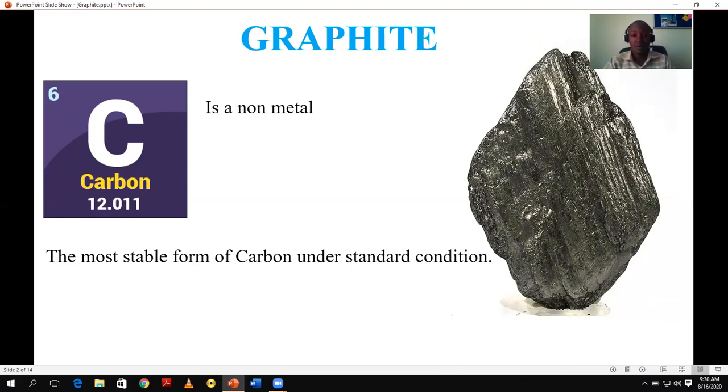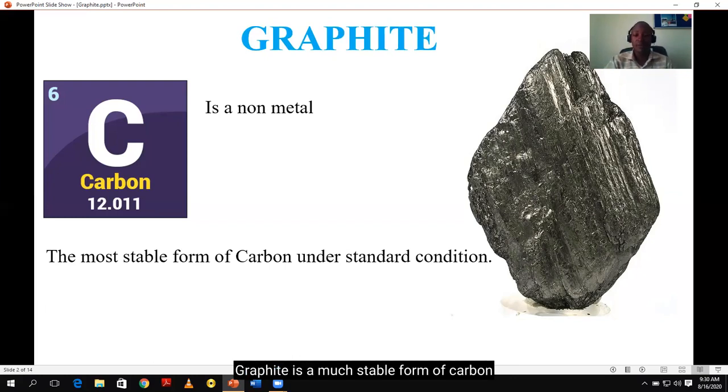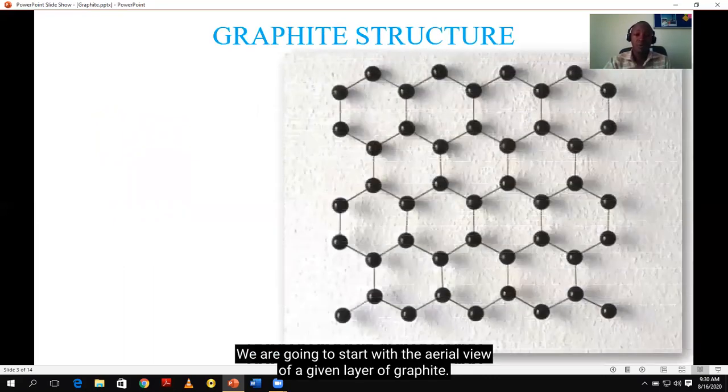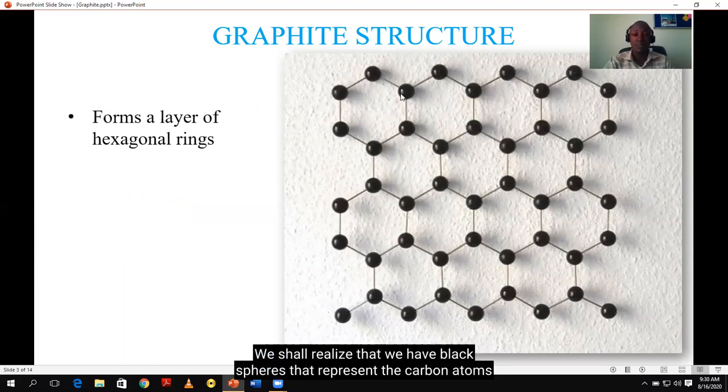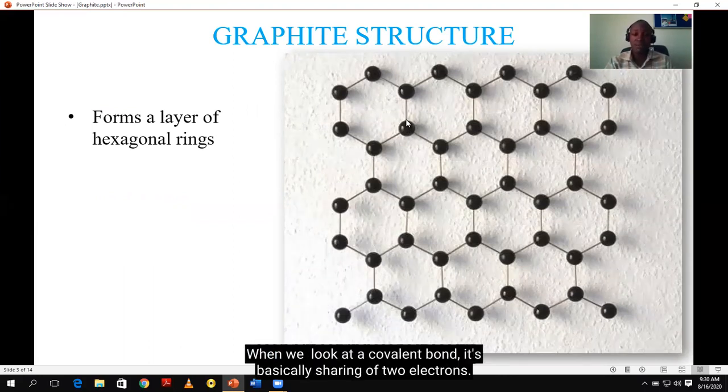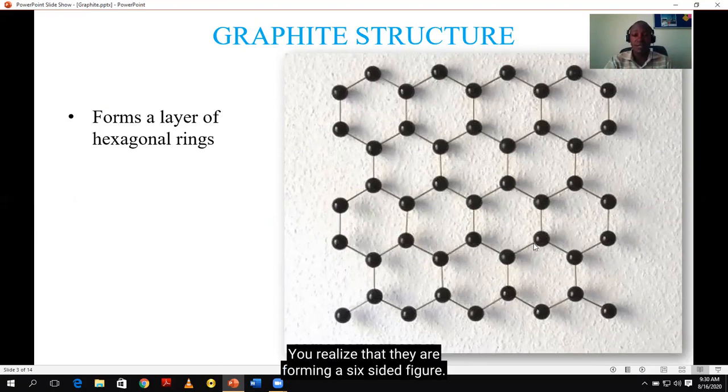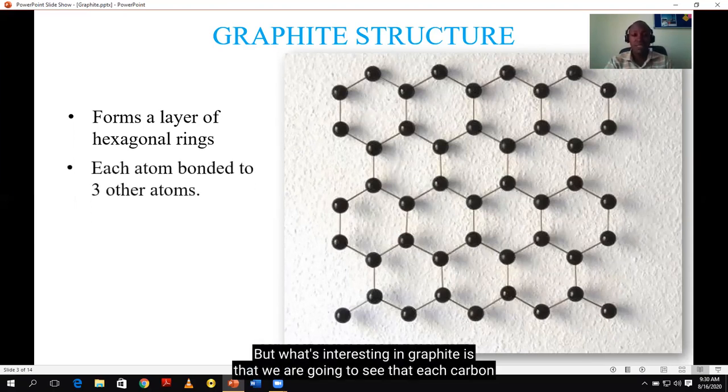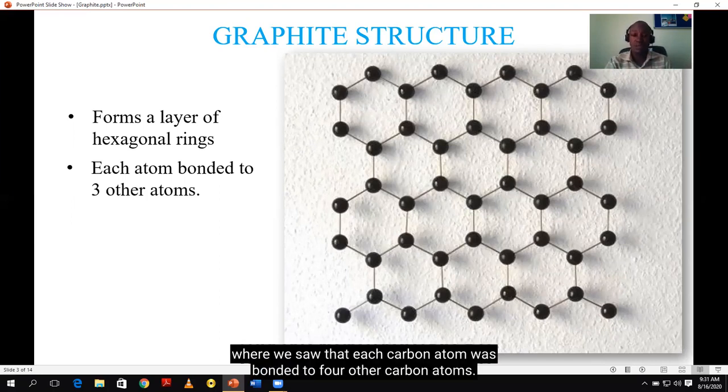Looking at the structure of graphite, we are going to start with the aerial view of a given layer of graphite. When you look at this given layer of graphite, we shall realize that we have black spheres that represent the carbon atoms, and we have these fine lines that represent the covalent bond. When you look at a covalent bond, it's basically sharing of two electrons. So when you look at how these carbon atoms are arranged in graphite, you realize that they are forming a six-sided figure. That's why we say it forms a layer of hexagonal rings. But what's interesting in graphite is that we are going to see that each carbon atom is actually bonded to three other carbon atoms, unlike diamond where we saw that each carbon atom was bonded to four other carbon atoms.